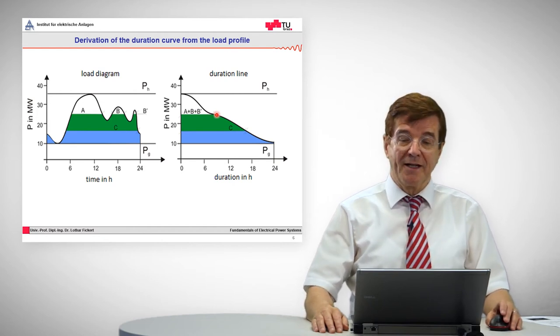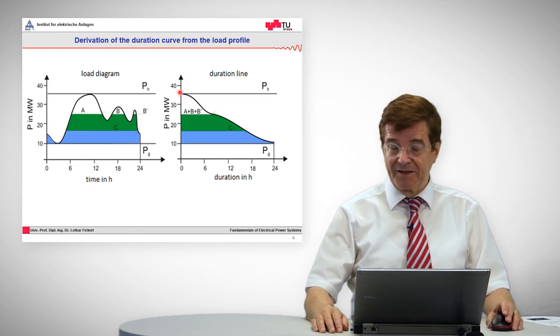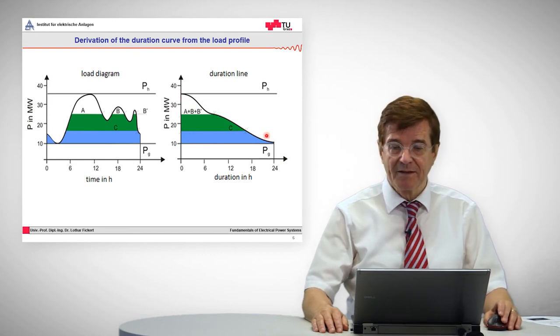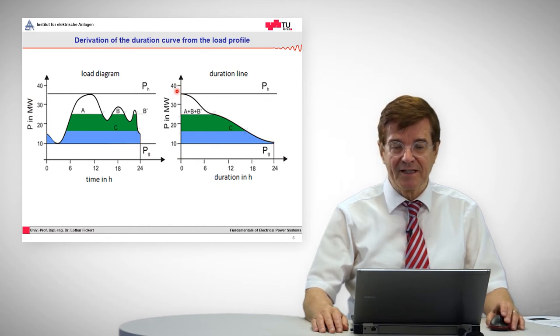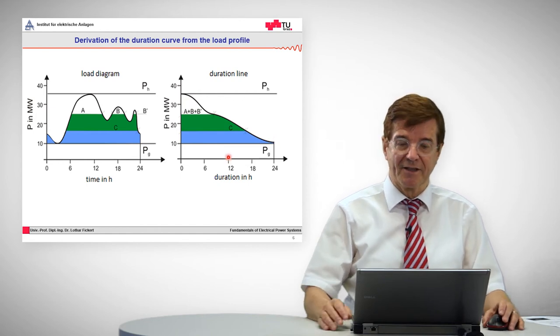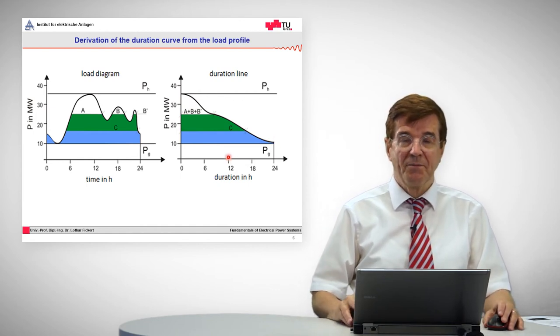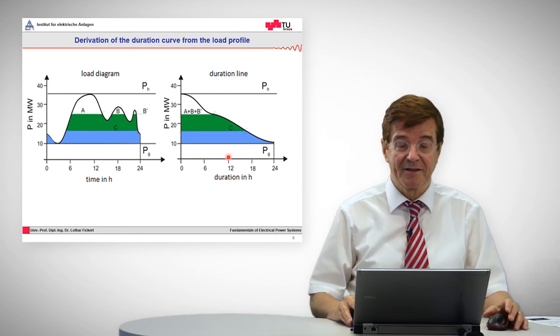Also from this load line we have two characteristic points, the maximum peak and the minimum peak. What is important is that the surface below this line, that is this area here, corresponds to the total energy that is consumed by this city or by this type of consumer.